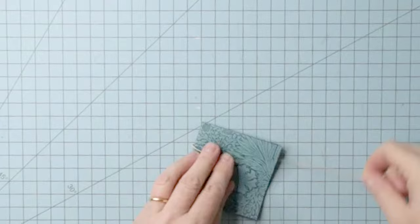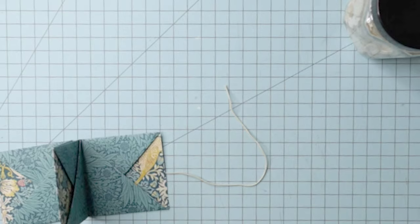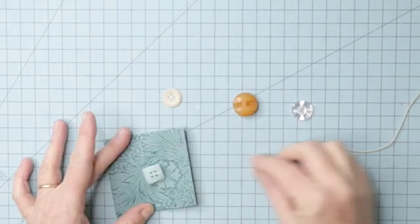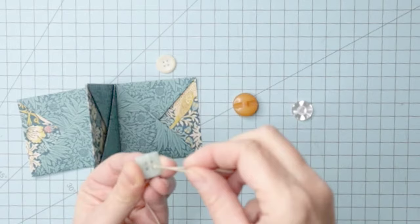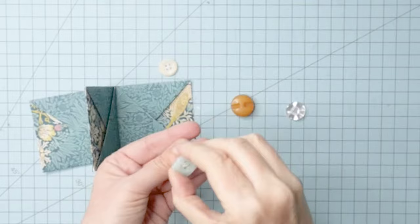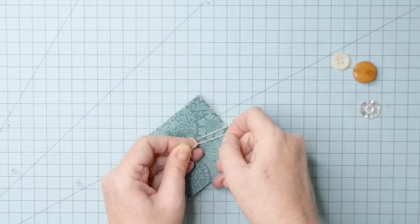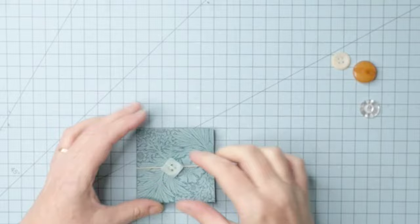I'm taking a piece of one millimetre elastic for a closure, choosing a cute button. Thread my elastic through that button. Just through two of the four buttonholes. Wrap it fairly tightly around the book and tie a knot on the back. Trim the extra up. This is just one of many different closure ideas.